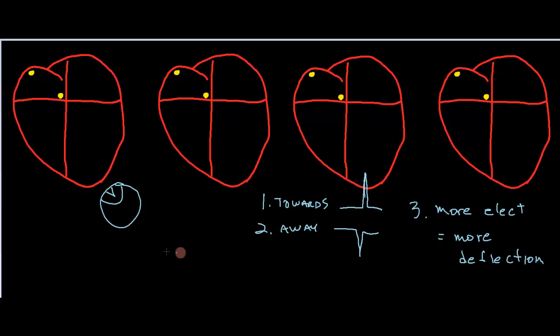Rule number three is going to be, more electricity equals more deflection. So if we have a little bump like that and a big bump like this, we know that this one is more electricity and more tissue relative to this.